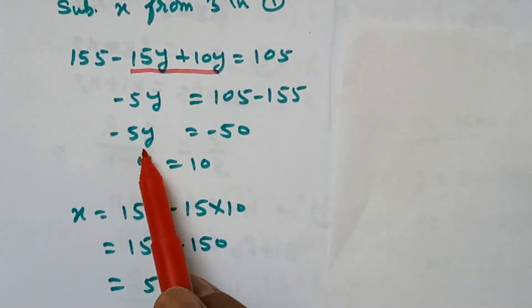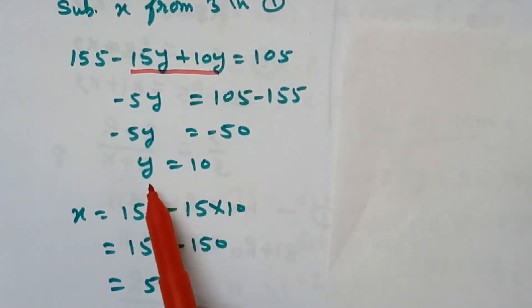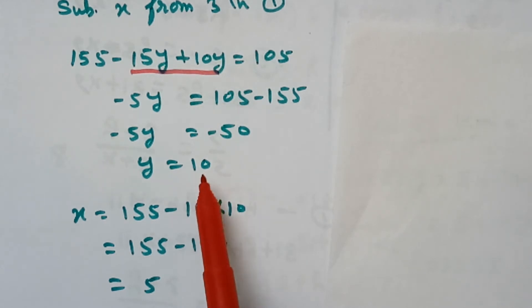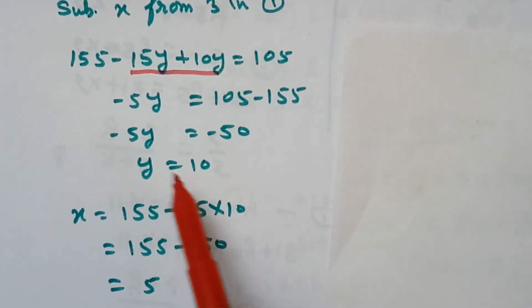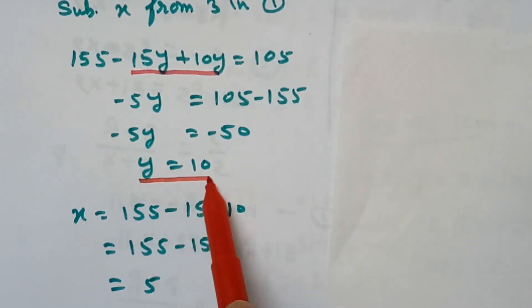This minus 5y equals to minus 50. y equals to 10. The value of y means charge, y is charge per km which equals to Rs. 10.